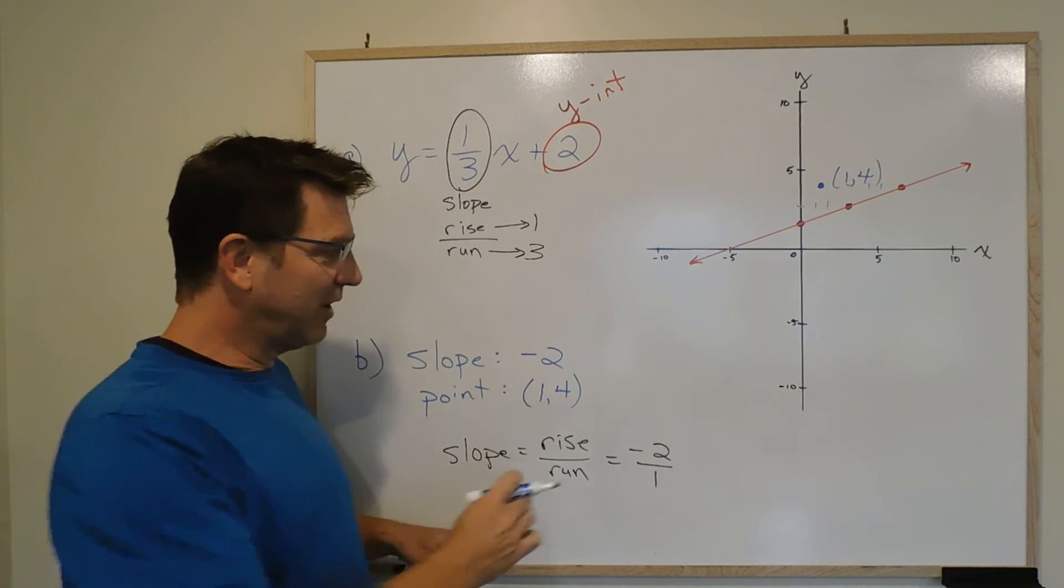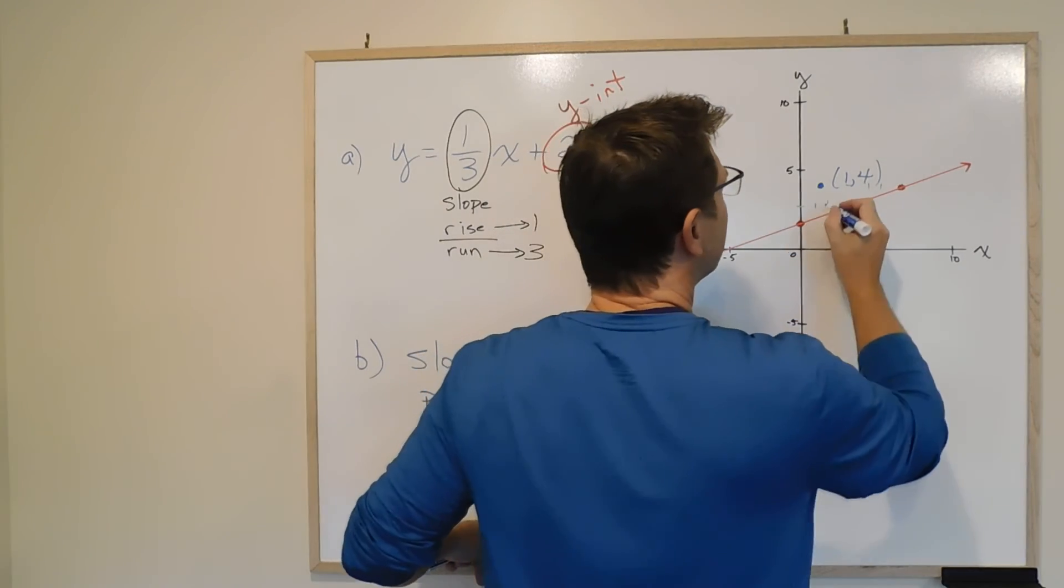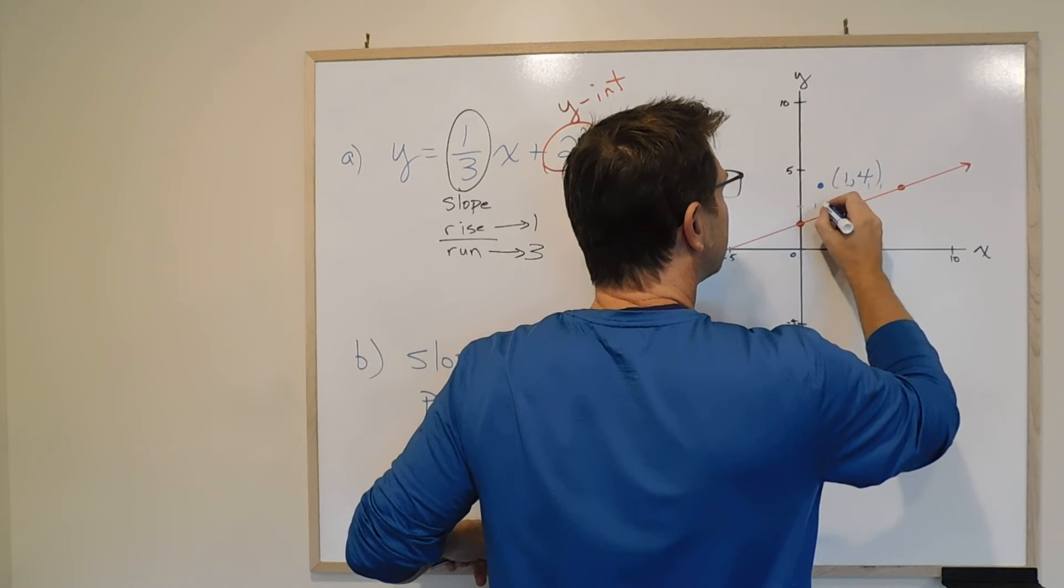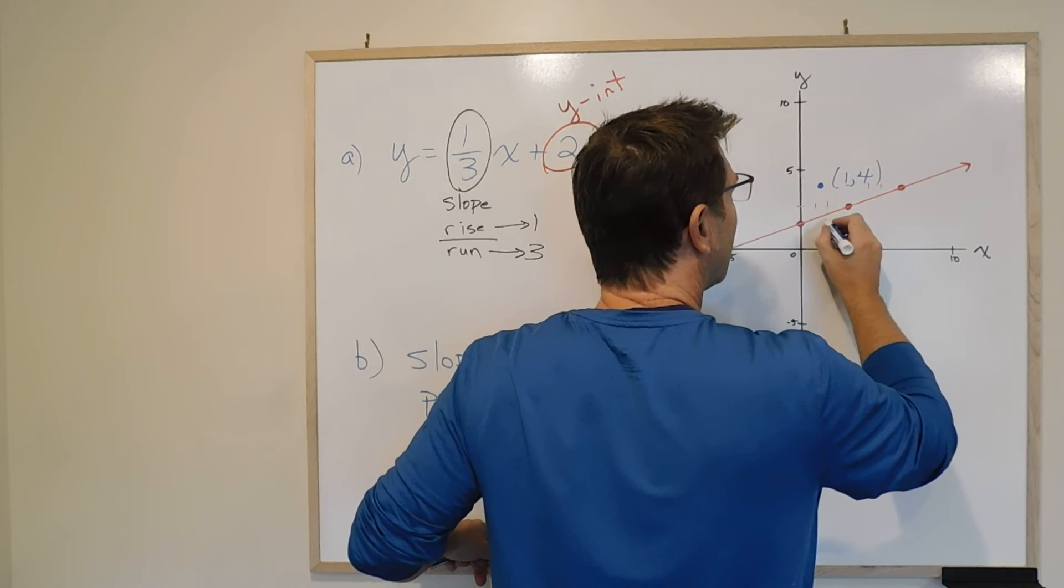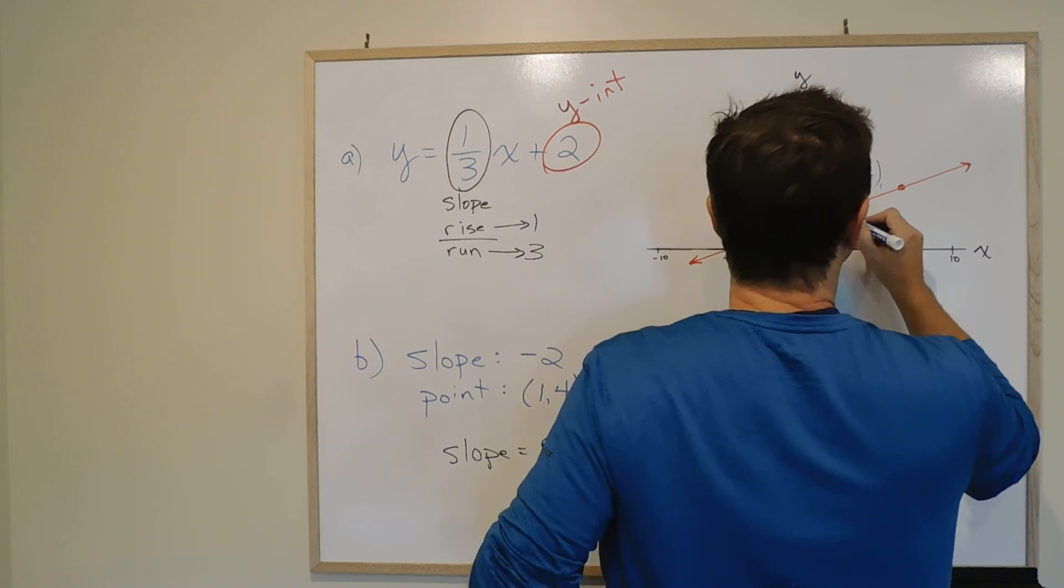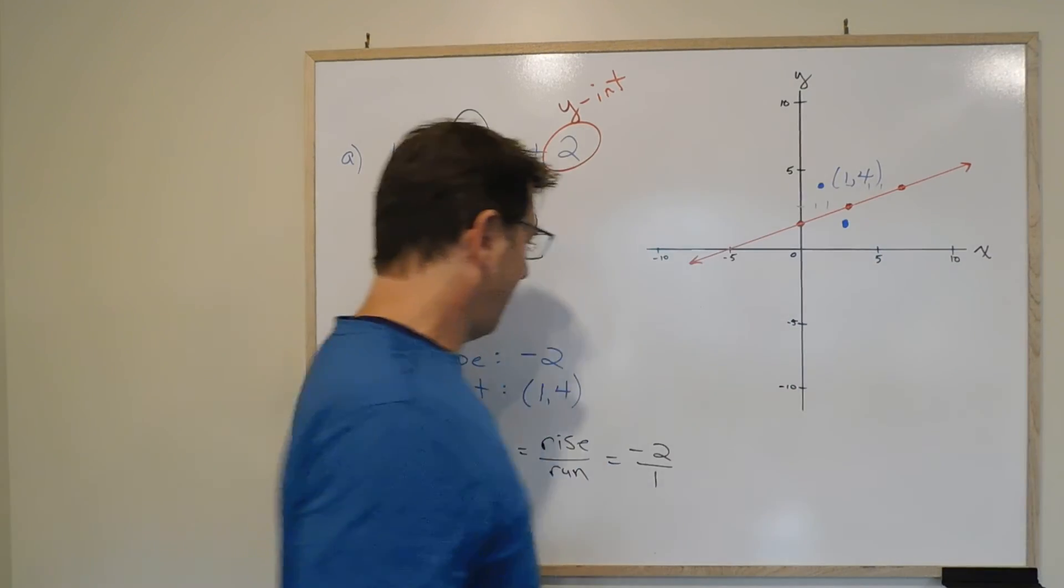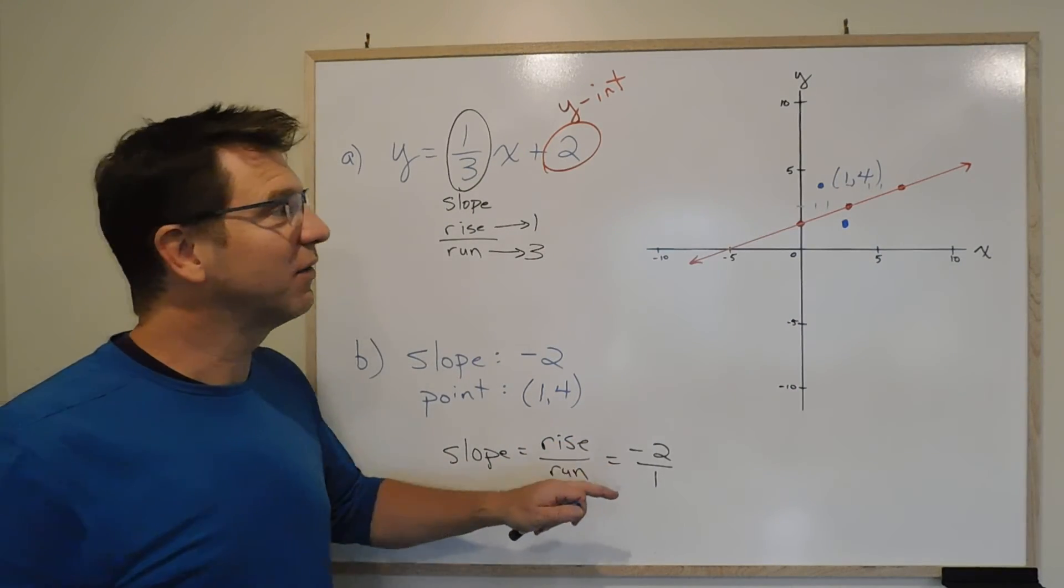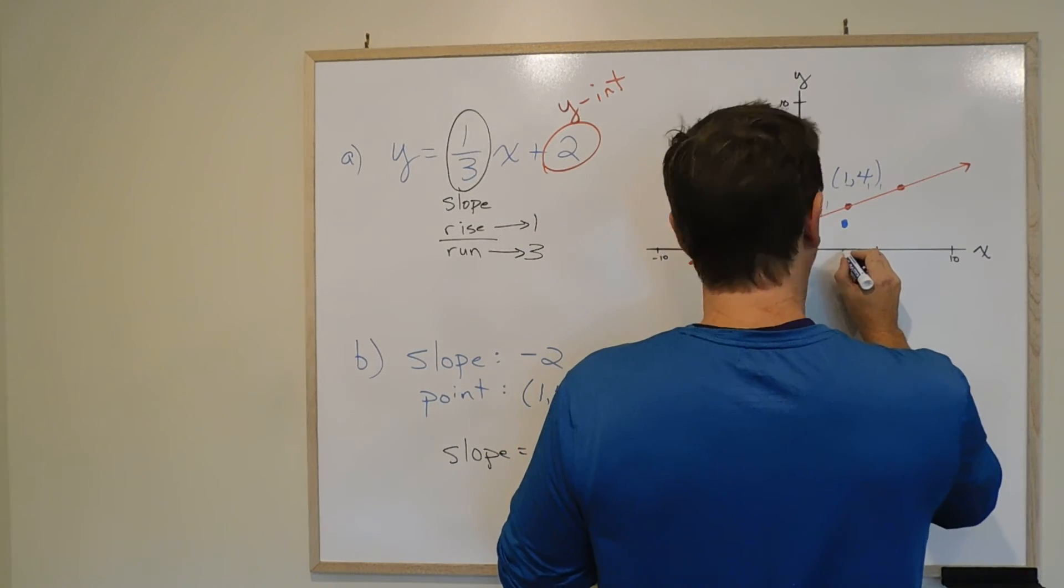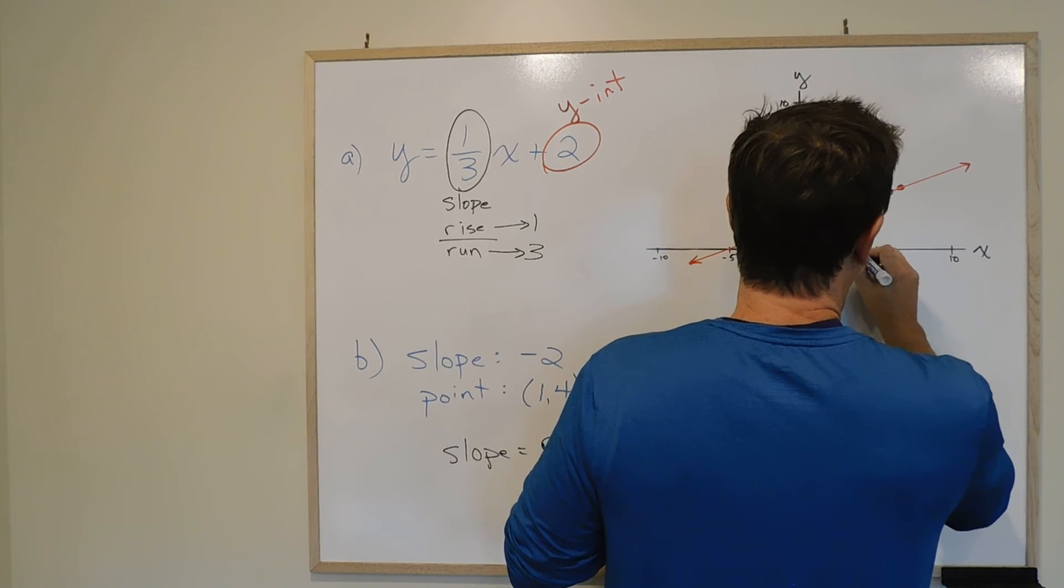So we go down 2 and then over to the right because it's 1. So we're going to go down 2, from 4 to 3 to 2. And we're going to go over 1. And we're going to be, oh, I don't know, right about here. And then we're going to go down 2 again and over 1 again. So we're going to go down 2 more. 1, 2. And we're going to go over 1. And we're going to be somewhere around there.